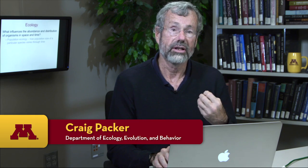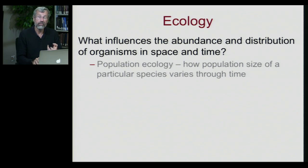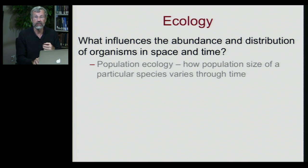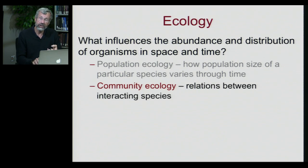We're continuing our survey in ecology, which is focused on the factors that influence the abundance and distribution of species in space and time. We've already looked at population ecology, which looks at population size within a species, and we also looked at evolutionary ecology and thinking about evolution of the lifespan. Today, we're going to turn to community ecology, which focuses on relations between interacting species.